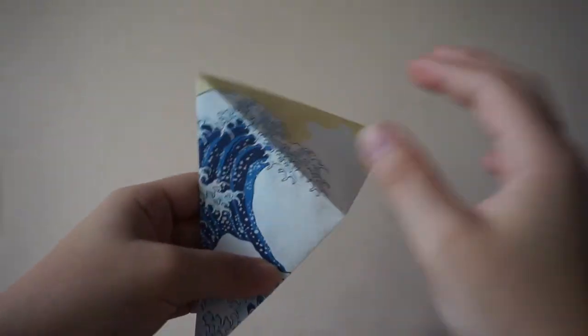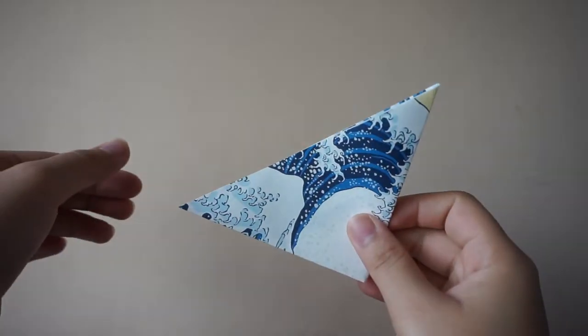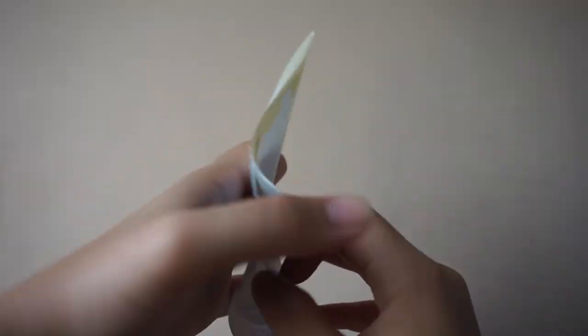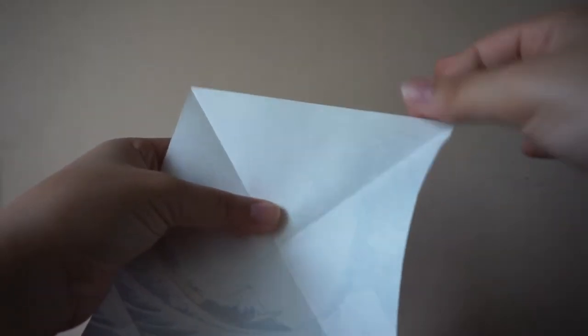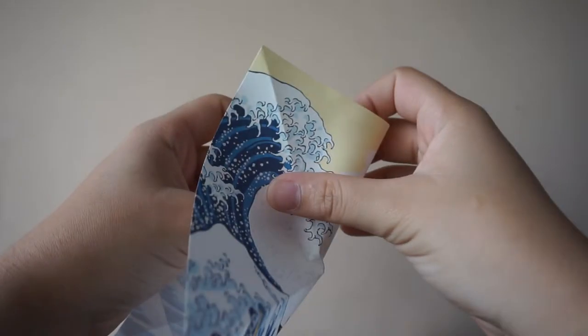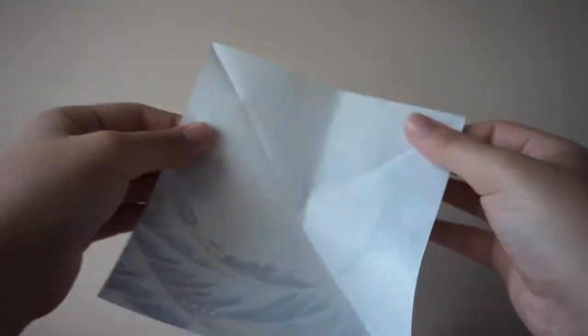It originates from the words ori meaning fold and kami meaning paper. One of the most famous origami is the paper crane or in Japanese orizuru.